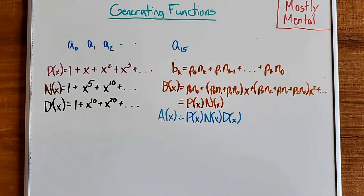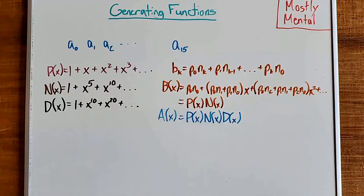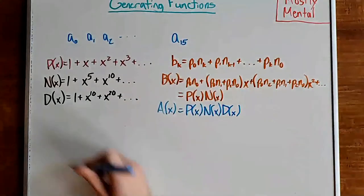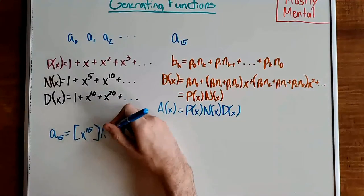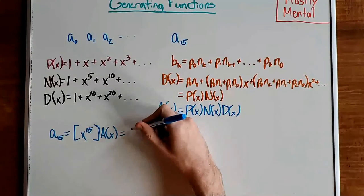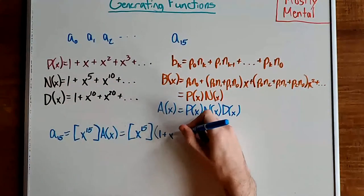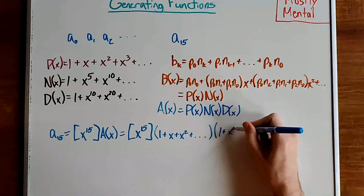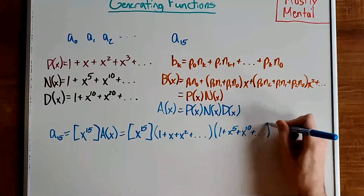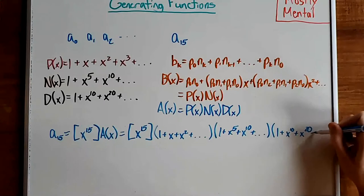That's really important, so I'll say it again: the generating function for a sum of values is the product of the individual generating functions. So a sub 15, which is what we were originally looking for, is the coefficient of x to the 15th in our generating function — which is the coefficient in P of x times N of x times D of x, that is, (1 plus x plus x squared plus ...) times (1 plus x to the 5th plus x to the 10th plus ...) times (1 plus x to the 10th plus x to the 20th plus ...).